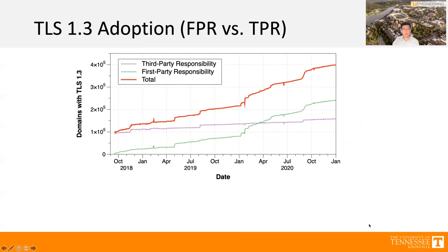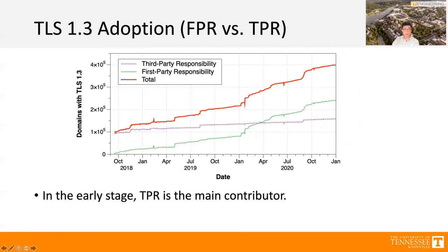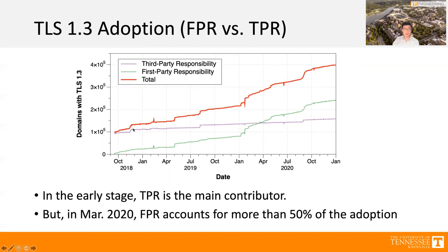We also compare first-party and third-party responsibility. The red line is the total number of domains supporting TLS 1.3. The green line indicates first-party responsibility and the purple line is third-party responsibility. At all early stages, third party is the main contributor to TLS 1.3 adoption. However, around March 2020, first-party platforms accounted for more than 50% of adoption rate, and after that point, first-party responsibility platforms surpassed third-party responsibility platforms.